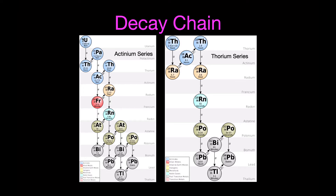For each isotope on the decay chain, the diagram gives the element with its mass number and atomic number, plus the half-life. For uranium-235, the half-life is 7.04 × 10⁸ years — 704 million years. It undergoes alpha decay, losing 4 from the mass number and 2 from the atomic number, producing thorium-231 with a half-life of 25.52 hours. Thorium then undergoes beta-minus decay to protactinium, then alpha decay to actinium. Actinium can go either alpha or beta-minus, and the chain continues through francium, radium, and eventually down to lead-207.